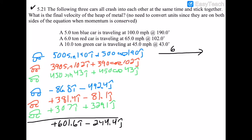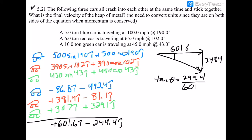Drawing the triangle: 601.6 in the i-direction and 244.4 in the negative j-direction gives the resultant momentum vector. The angle satisfies tan(θ) = 244.4 / 601.6, giving θ = 22.1°. Applying the Pythagorean theorem to 601.6 and 244.4 gives a total momentum magnitude of 649.3.